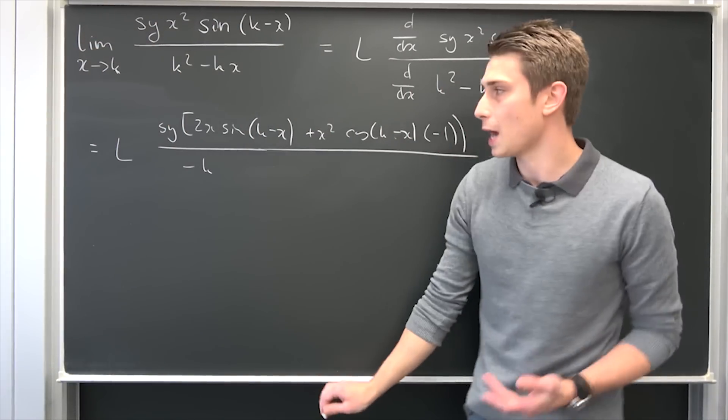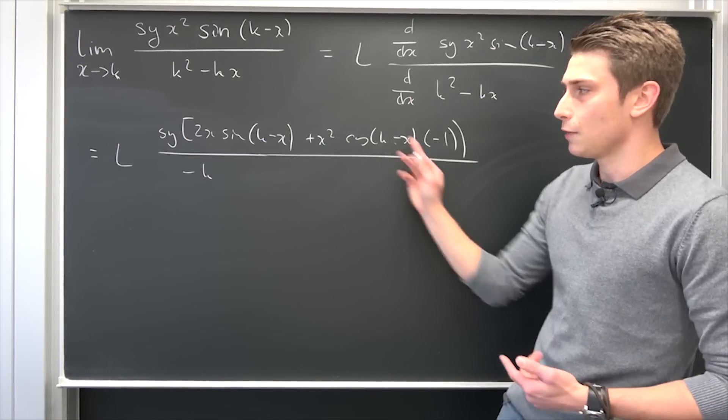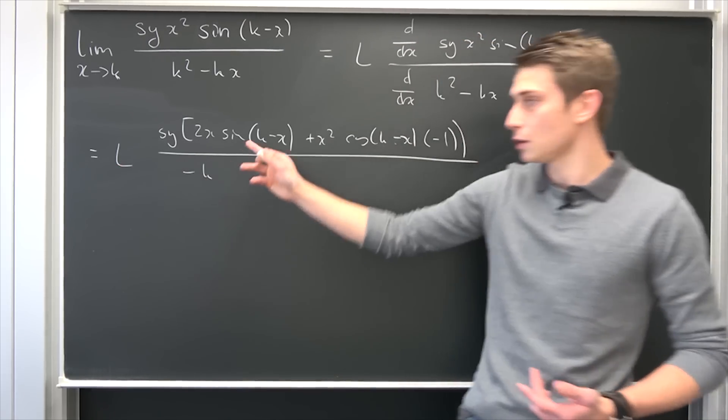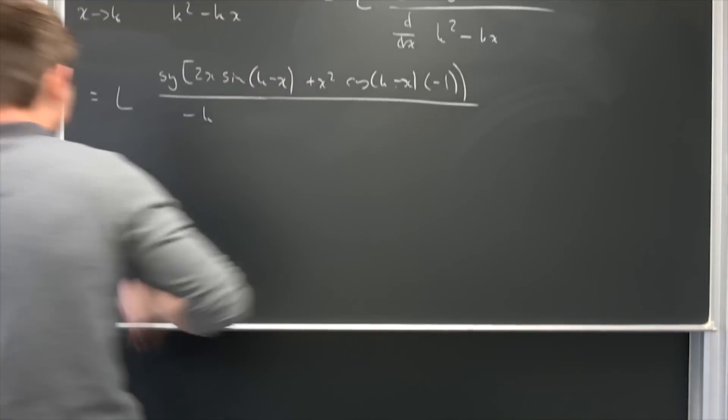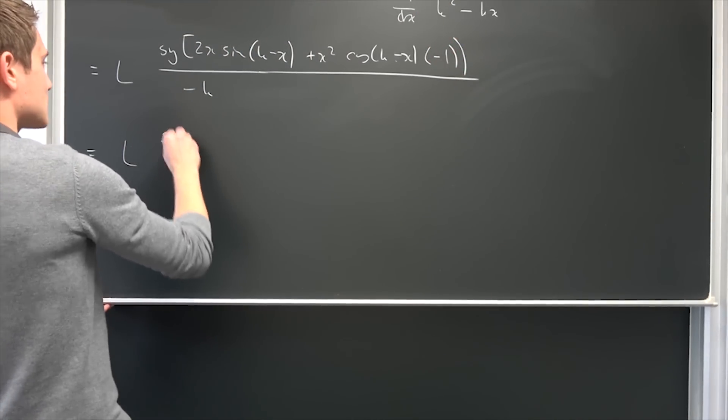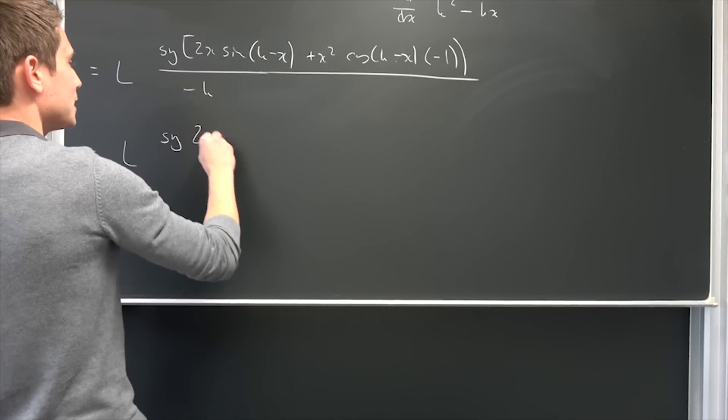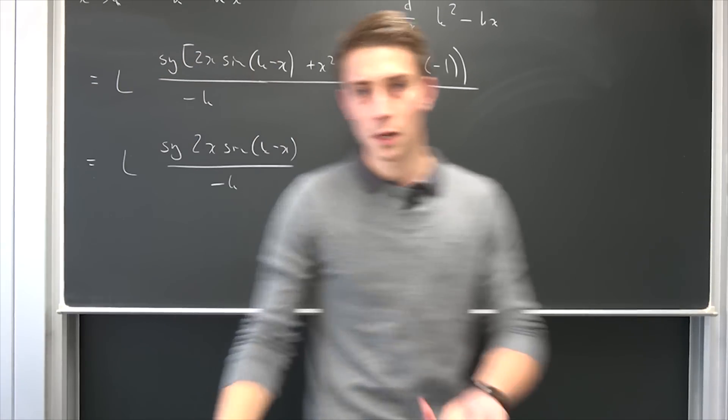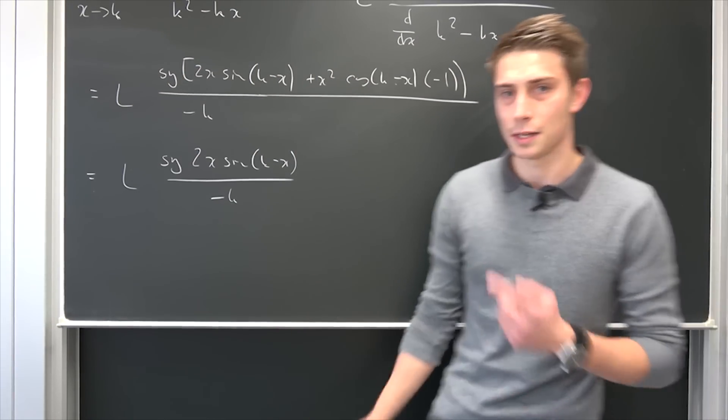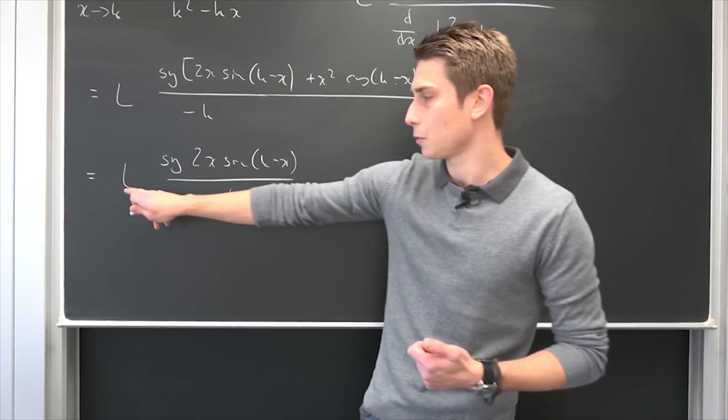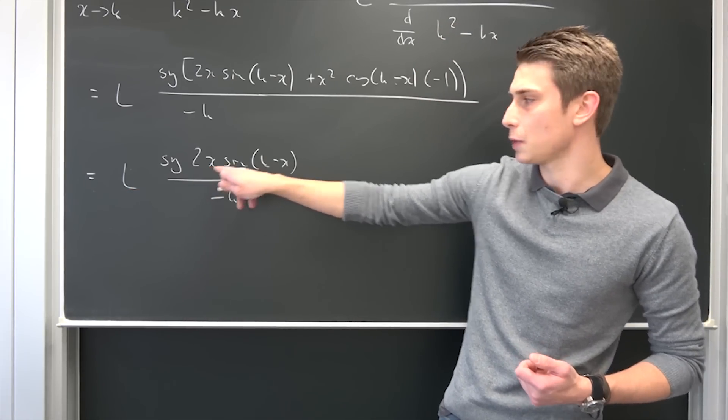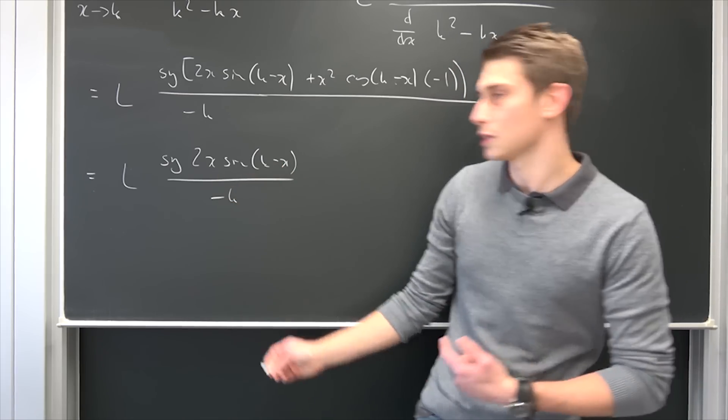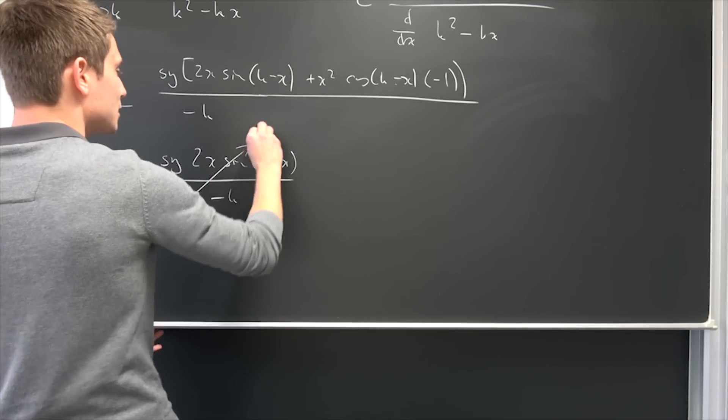What are we going to end up with right now? We have this stuff right here. Now it's quite easy to take the limit because we can expand the limit on both parts. So we have the limit of s times y and then 2 times x sine of k minus x over negative k. Now if we let the limit approach k, this is just k right here and we have the sine of zero in the end, since k minus k is zero. So this is just zero, so this limit is going to vanish in the end.